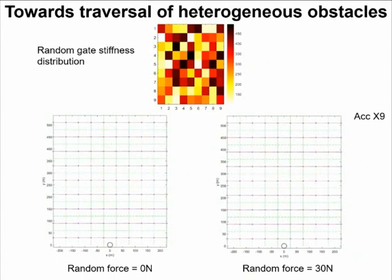If there is no random force, the body will be stuck at this gate, which has a large resistance. But with the help of the random force, the body may navigate to either gate to traverse.